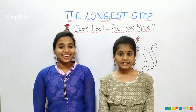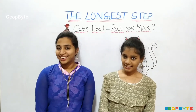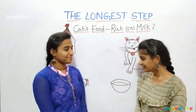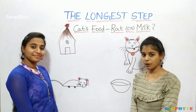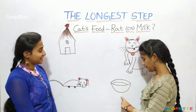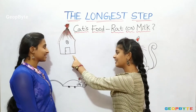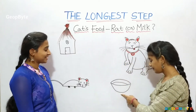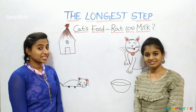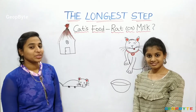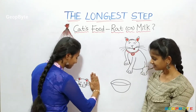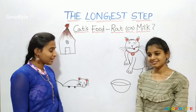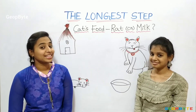Now let us get into the topic: cat's food — rat or milk. Hey kids, see here. There is a picture on this board. There are a cat, milk, rat, and a hut. Now measure the distance between rat and milk. Let us measure using fingers. The distance between rat and milk is 10 fingers.